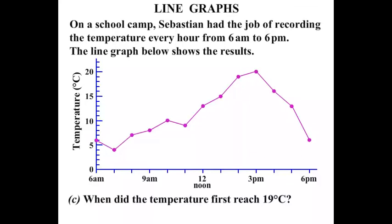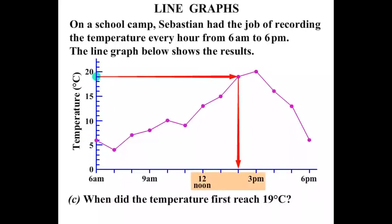When did the temperature first reach 19 degrees Celsius? Looking at the temperature axis from 15 to 20, 19 is right there. We read across and find the first time it hits the graph. Reading down from that point, we pass 12 noon and 1pm, and our answer is 2pm.